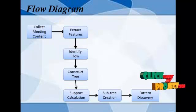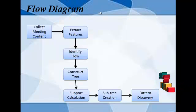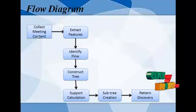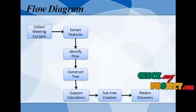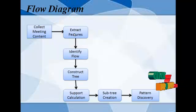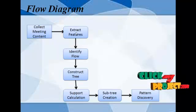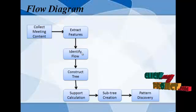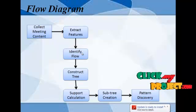Now going to explain the data flow diagram. The input of our project is meeting content. First we collect the meeting content and feed it into the project. Then we extract features from the input — this part defines which content is proposed and which is a command.